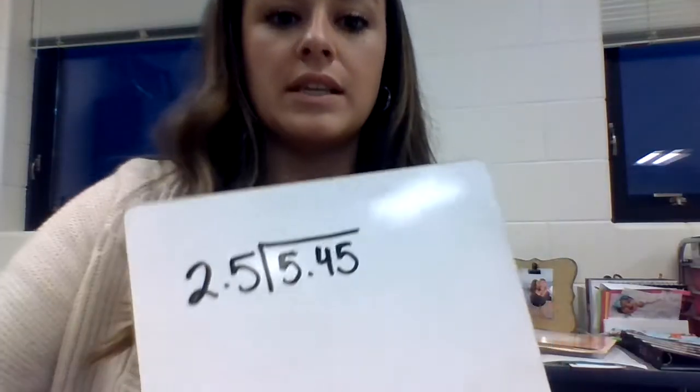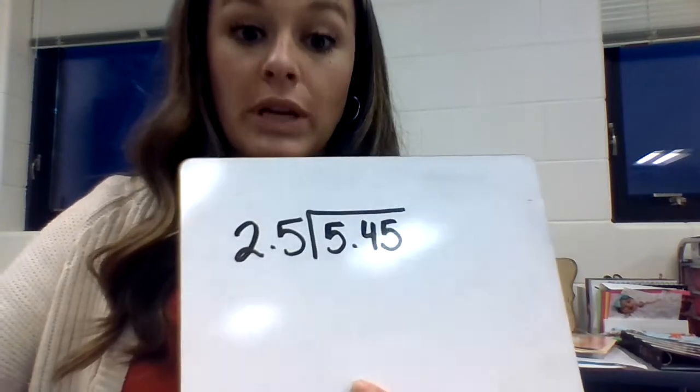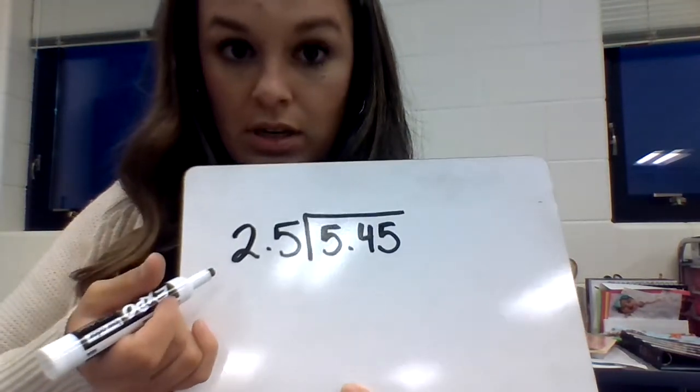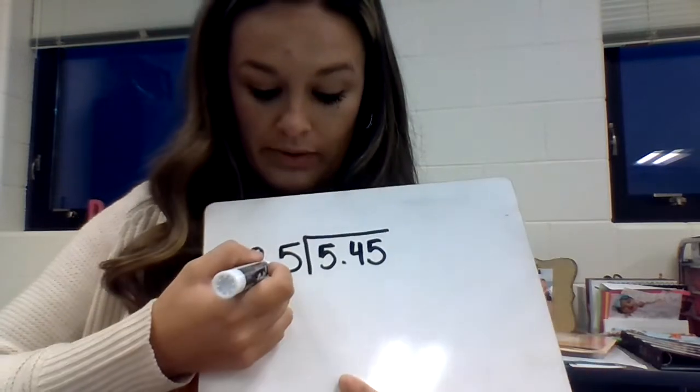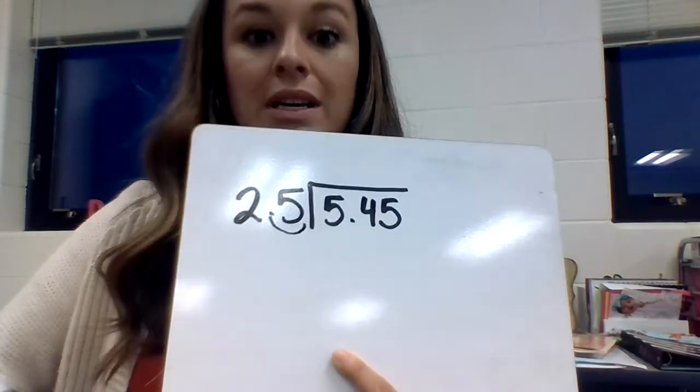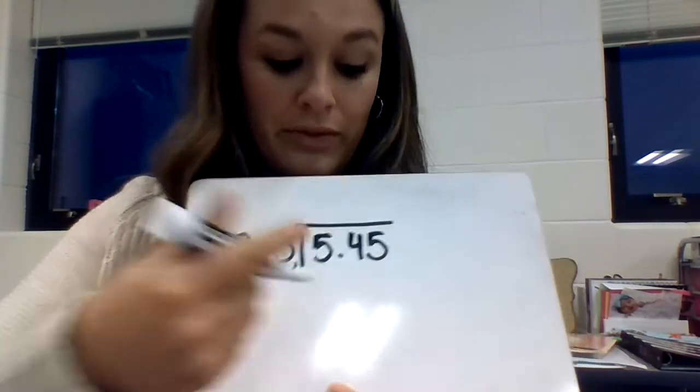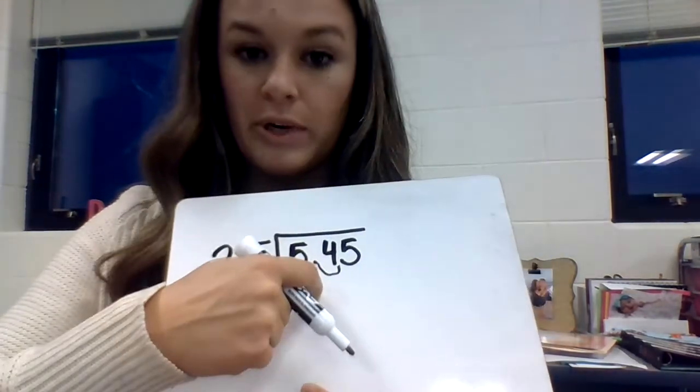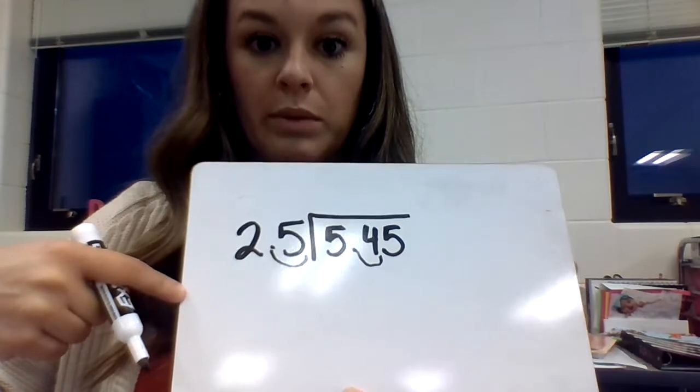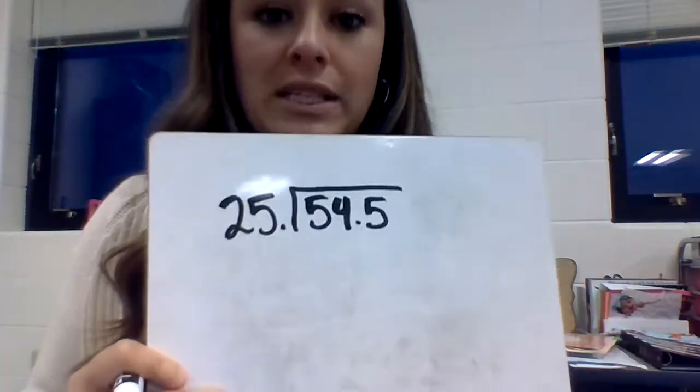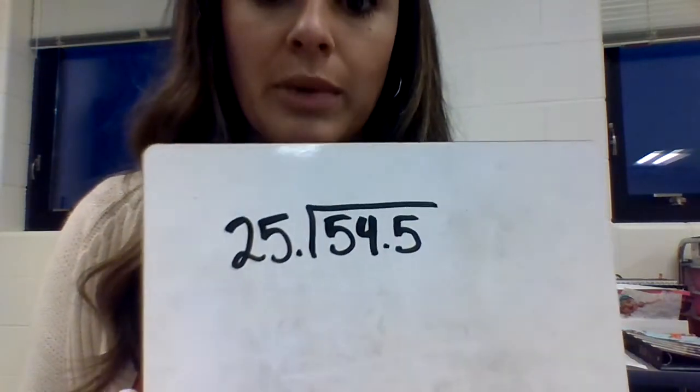This is the next example. We need to make the divisor a whole number. We have to move this over once. Since we moved this decimal over once, we have to move this decimal over once as well. This does not have to be a whole number. Only this number.